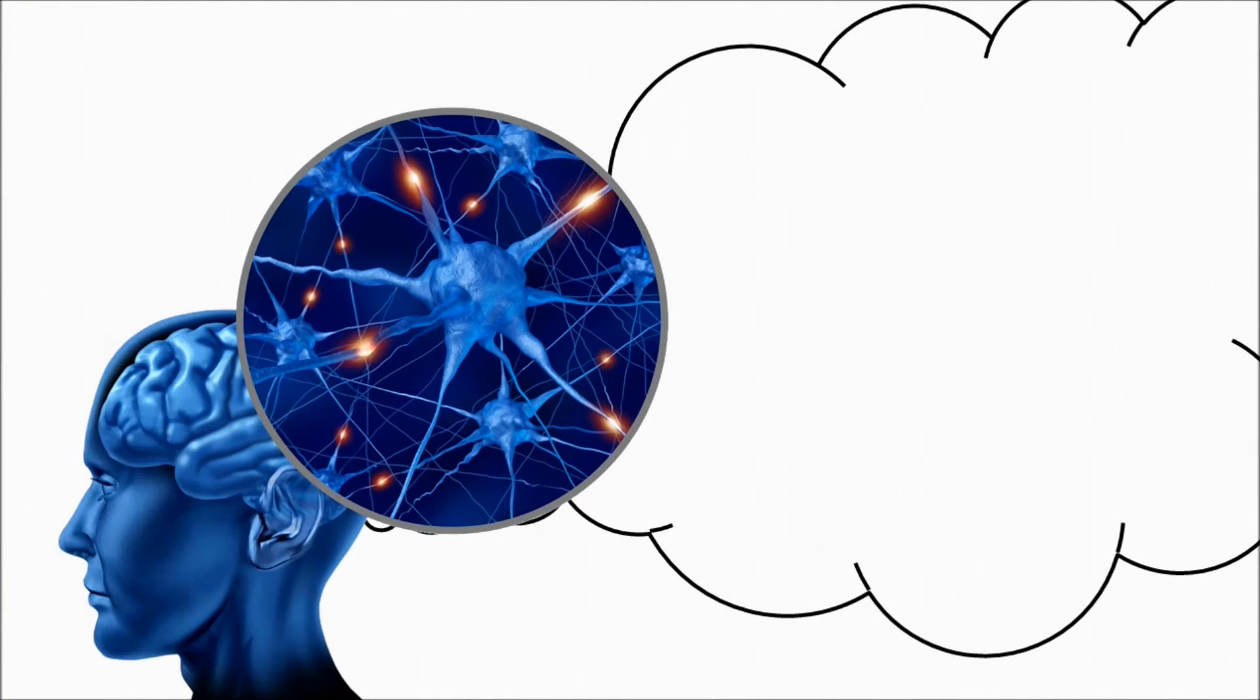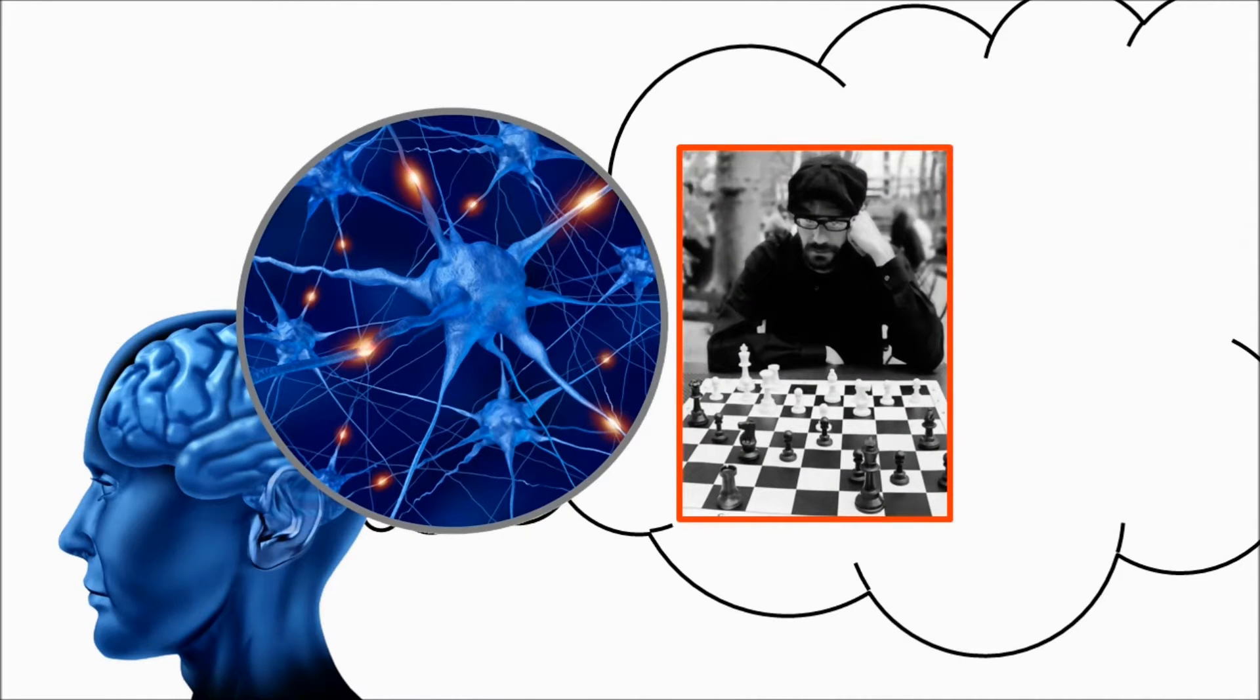In human learning, after we learn one skill, such as playing chess, that knowledge does not get erased if we go learn another skill, such as playing soccer.